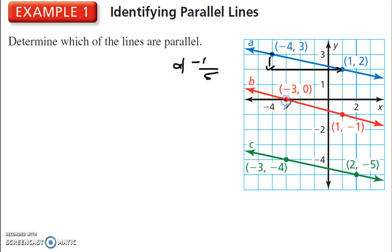Line B, down 1. So minus 1. Over 1, 2, 3, 4. Over 4. So these two are not parallel, A and B. What about C? Down 1, minus 1. Over 1, 2, 3, 4, 5. Over 5. So A, line A is parallel to line C, because they have the same slope.